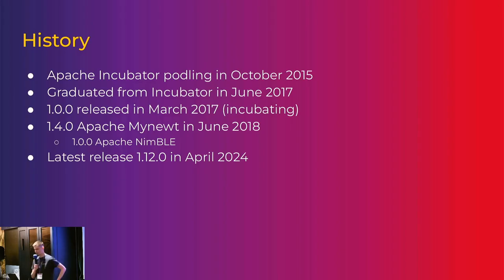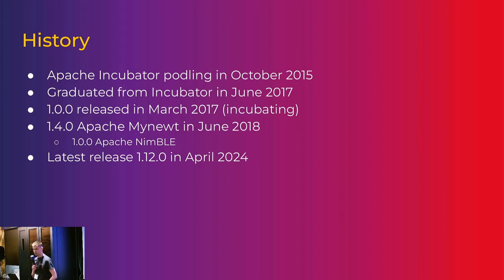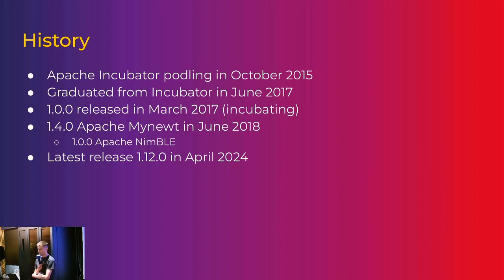The history of Apache MyNute: the project started as a podling in the Apache Incubator in late 2015. It was initially started by a company called Runtime, and later a few more companies joined. The project graduated and became a top-level project in June 2017, shortly after which we did the first 1.0 release. In June 2018 we released Apache MyNute 1.4, a major step toward an open-source Bluetooth implementation when we moved the Bluetooth stack into a sub-project with a separate repo. The latest release was 2.12, done in April this year.